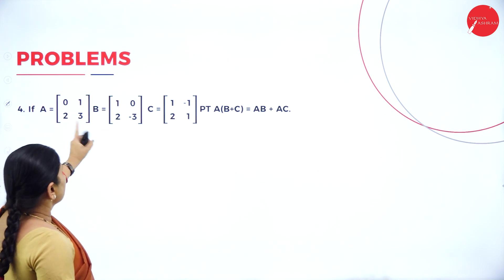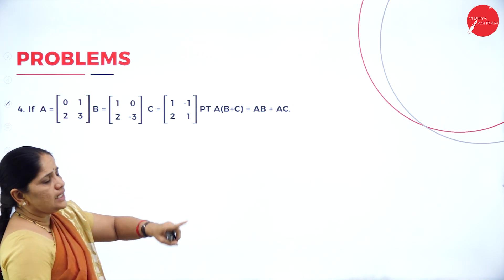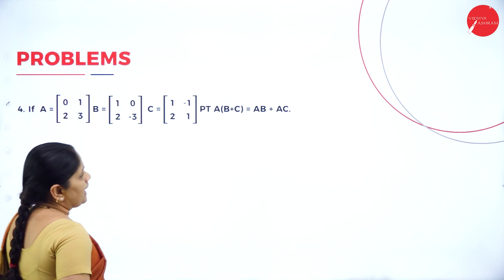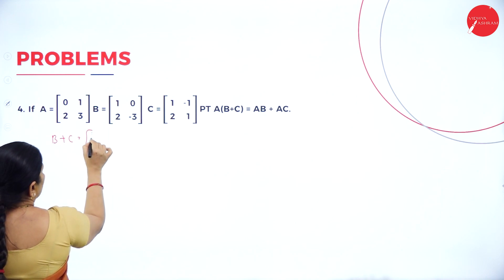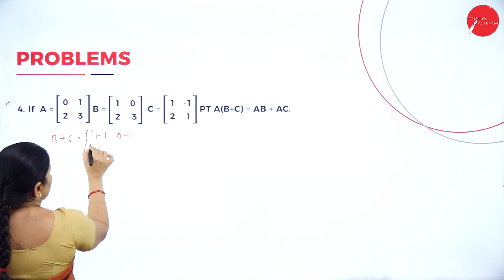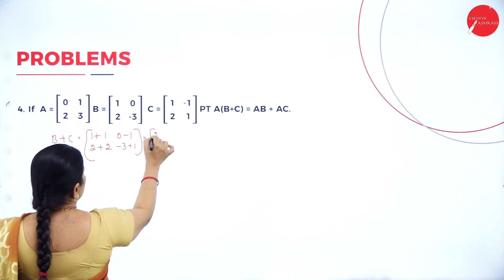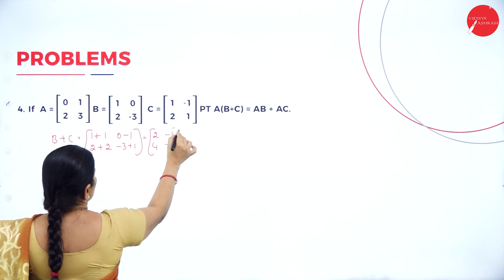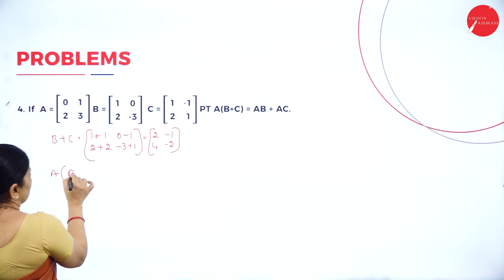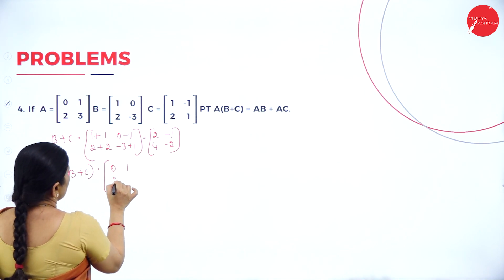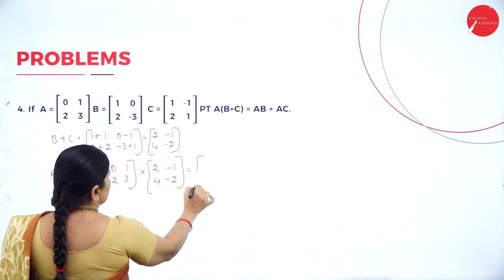Now the next problem: if A equals [0, 1; 2, 3], B equals [1, 0; 2, -3], C equals [1, -1; 2, 1], prove that A(B+C) equals AB plus AC. First we will find B plus C: 1+1, 0+(-1), 2+2, -3+1, giving B plus C equals [2, -1; 4, -2].